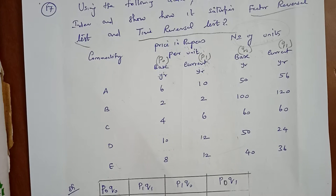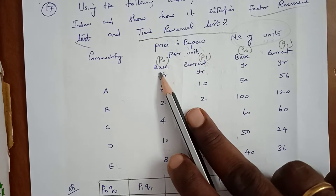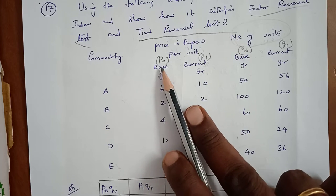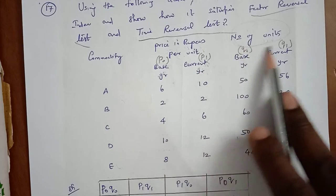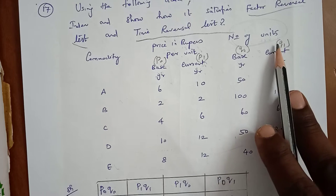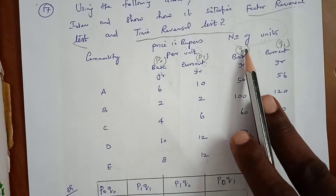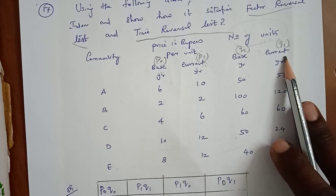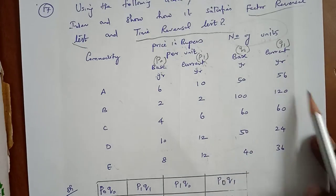So the commodities are given — five commodities from A to E. Next, price in rupees is given. Base year price is P0 and current year price is P1. Next, number of units is quantity: quantity in base year is Q0 and quantity in current year is Q1. So these two columns are prices and these two columns are quantities.